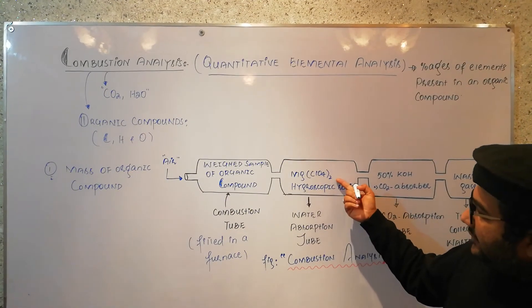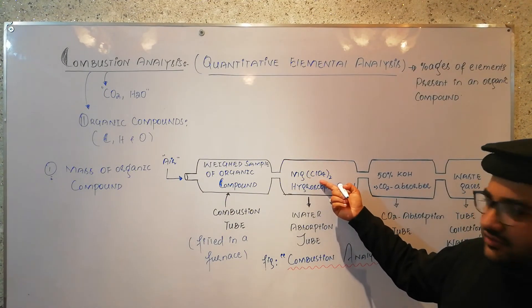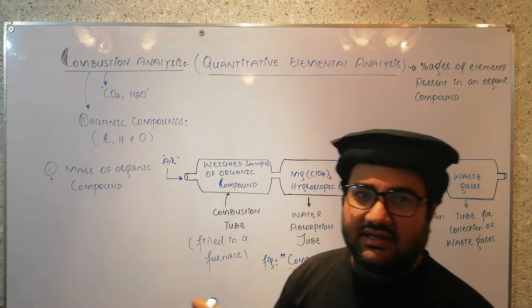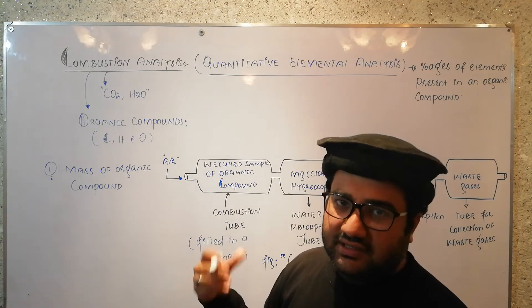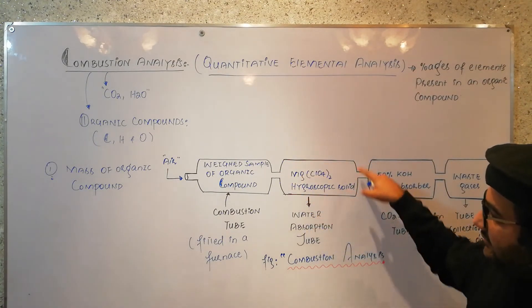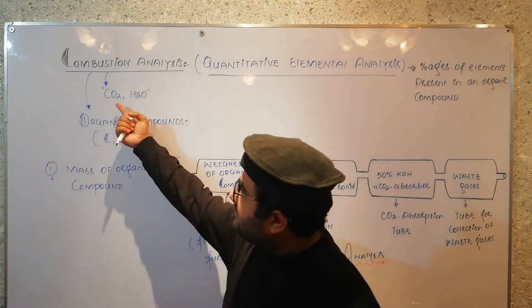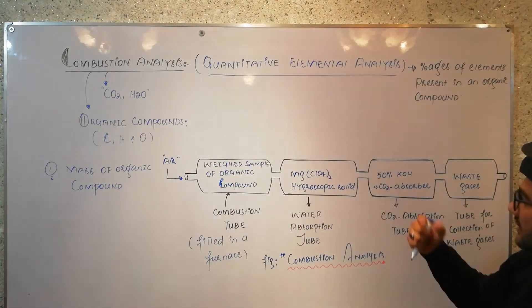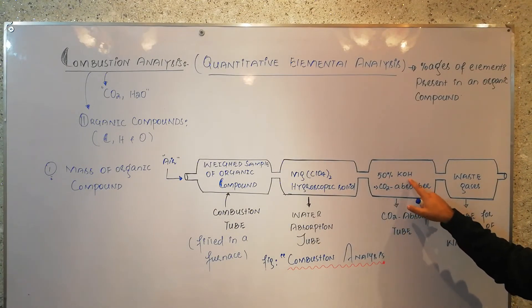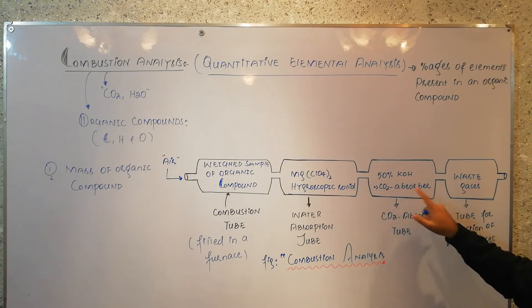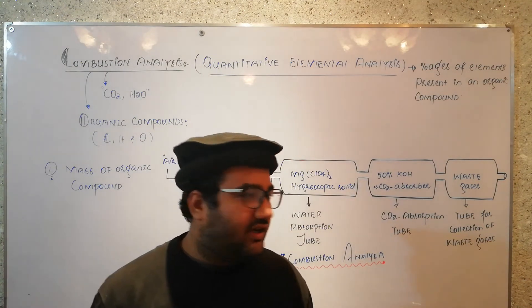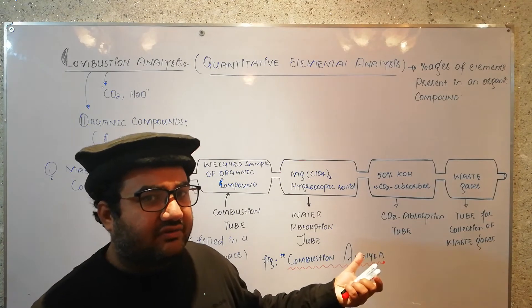The second tube contains magnesium perchlorate. Because it is a hygroscopic solid, it will absorb the water vapors which are a product of combustion of the organic compound — so the first product of combustion is captured here. The third tube is the carbon dioxide absorption tube, in which 50% KOH is used as a CO2 absorber, which absorbs carbon dioxide — the second major product of combustion. The last tube is just for the collection of waste gases.